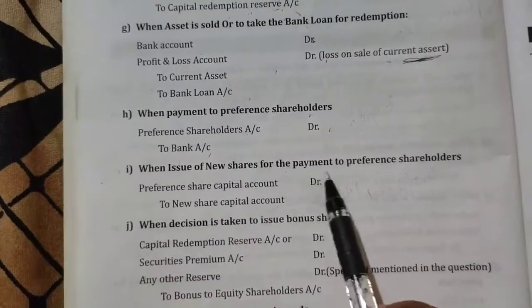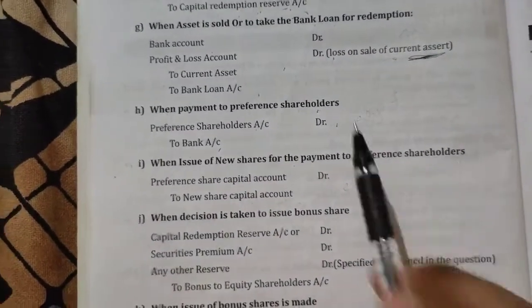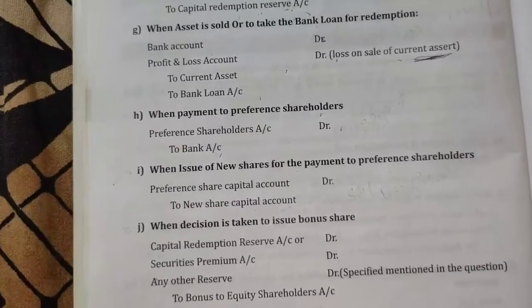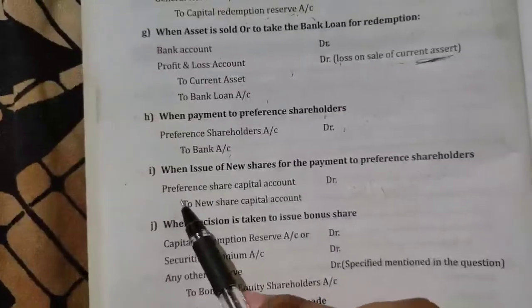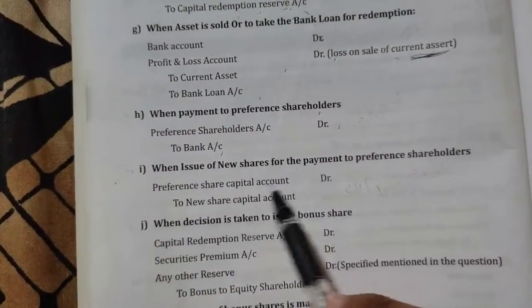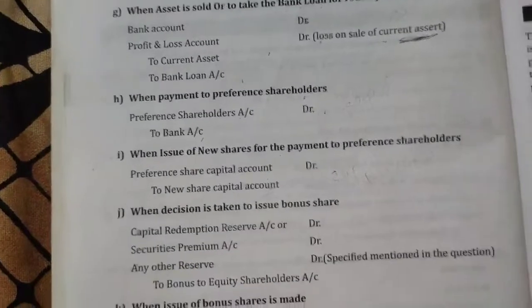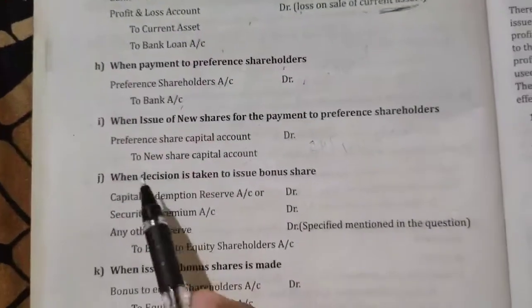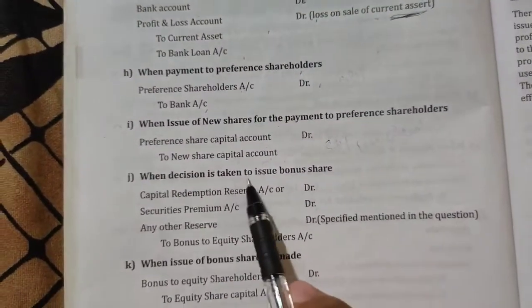When new shares are issued for the payment of preference shares, we write: Preference Share Capital Account Dr. to New Share Capital Account.